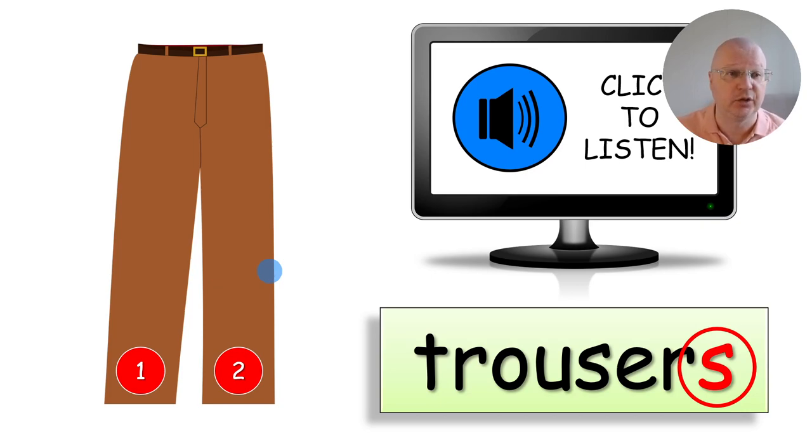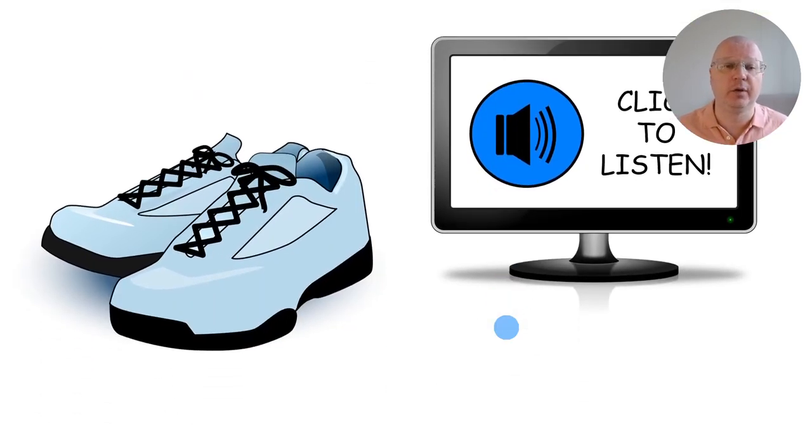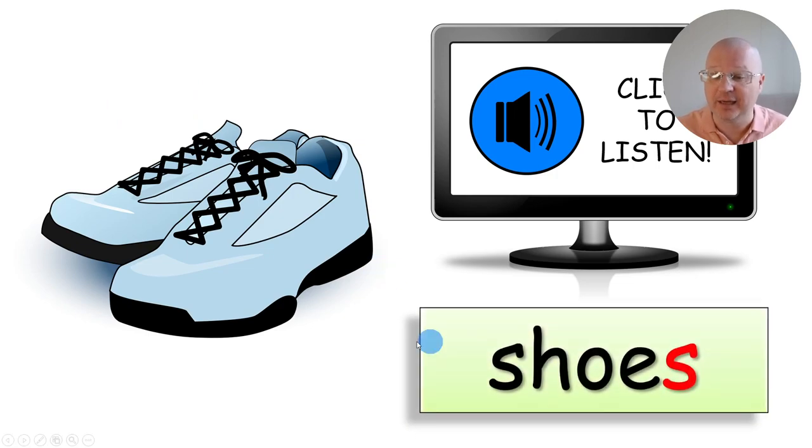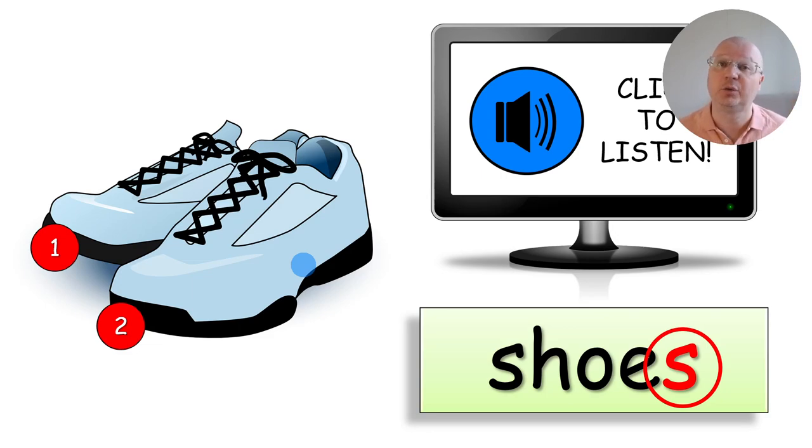So I draw the students' attention to the letter S and then I ask them: how many legs do we have? We have two legs. How many legs do trousers have? Trousers have two legs. One, two. So since we have two legs, we add the letter S. Trousers. Here is another word. Shoes. Same thing. We add an S because how many shoes do we have here? We have two shoes because we have two legs. This way students understand why we add an S to the noun in this case.